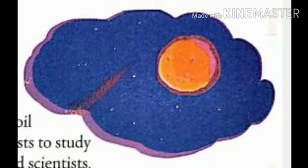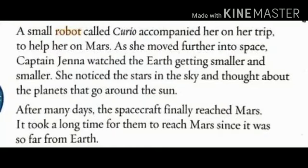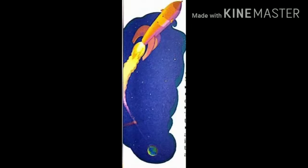A small robot called Curio accompanied her on her trip to help her on Mars. As she moved further into space, Captain Gina watched the Earth getting smaller and smaller. She noticed the stars in the sky and thought about the planets that go around the sun. The robot Curio helped her in reaching planet Mars. As she moved into space, she watched the Earth getting smaller and could see the beautiful twinkling stars, thinking about the planets that go around the sun.